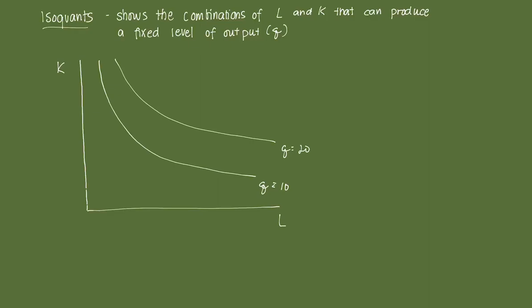An isoquant shows the combinations of L and K that can produce a fixed level of output. What that means is at any point along the isoquant, any combination will give you the exact same output. Say you have point A: that production combination uses Ka amount of capital and La amount of labor. At point B, it uses LB amount of labor and KB amount of capital. If I plugged Ka and La into my production function, it gives the exact same output as plugging in KB and LB — because they lie along the same isoquant.